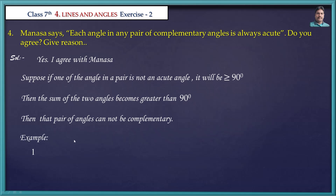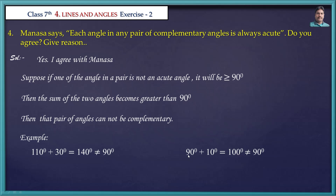For example, 110 degrees plus 30 degrees equals 140 degrees, which is not equal to 90 degrees. Here 110 is not an acute angle — it is greater than 90 degrees — so this is not a complementary pair. Another example: 90 degrees plus 10 degrees equals 100 degrees. Since 90 is not an acute angle, this is also not a complementary pair.